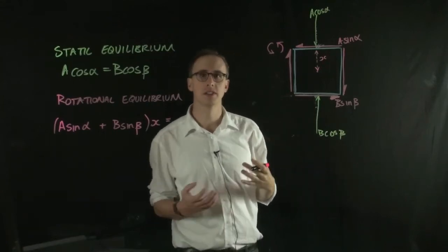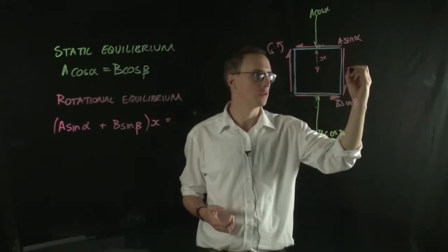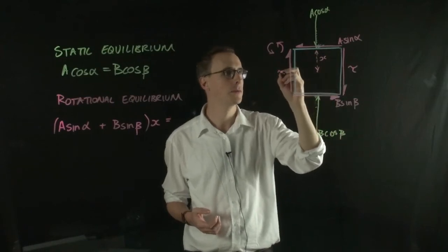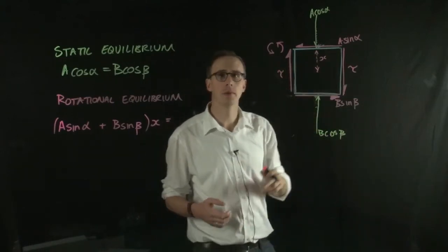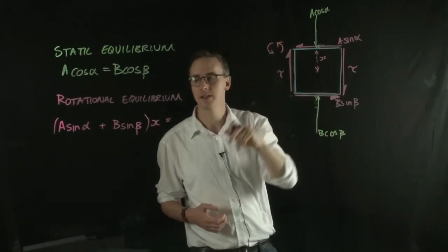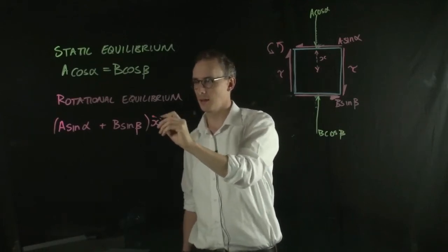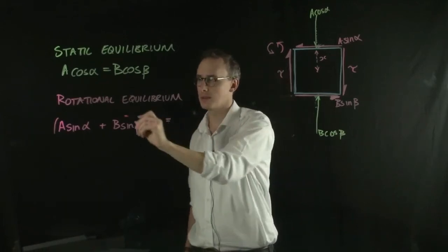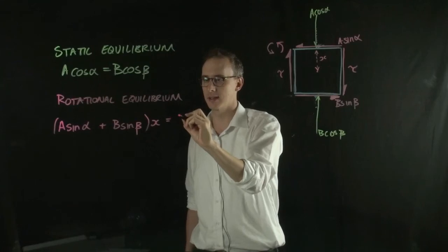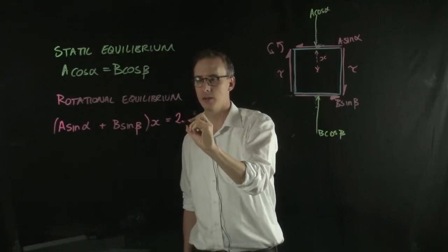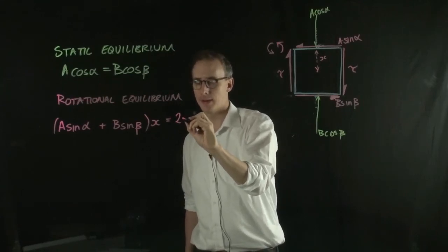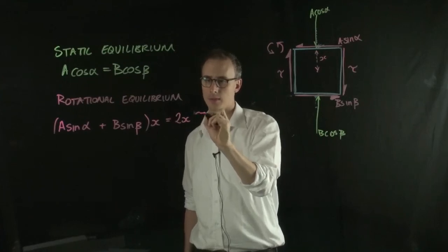And if we give those just a generic shear force, let's say call that tau, then the moments acting in this direction would be equal to the moments acting in the other direction. So we can say that that would be equal to 2x times by tau, or 2 tau x.